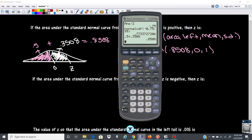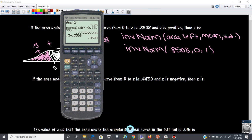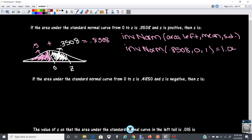So my calculator, I'm going to go 2nd distribution. I'm going to go down to this command here, inverse norm. Area to the left, 0.8508, 0, 1. And then I'm going to close it, enter. So 1.039, say 1.040. Okay, that's your z-score.